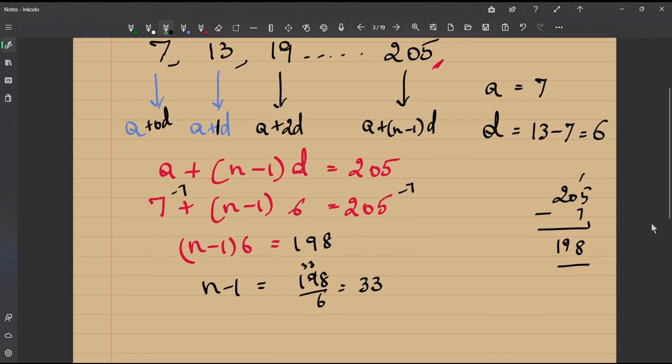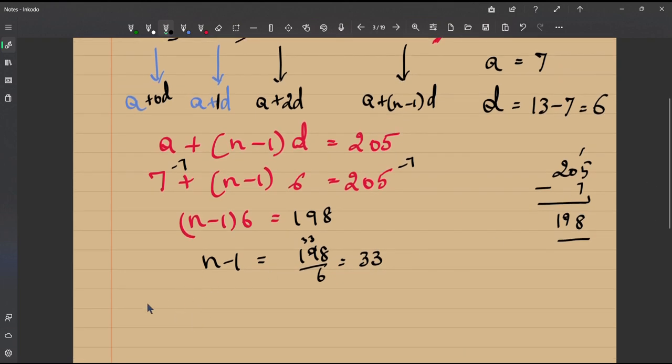So what are we asked to find? We have been asked to find n, the number of terms in the AP. The number of terms is 33 plus 1, so 34. 34 is going to be the final answer, the number of terms in this first arithmetic progression which has been given to us.